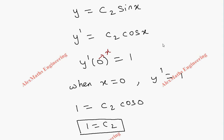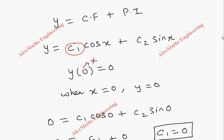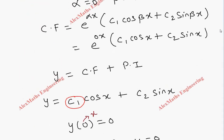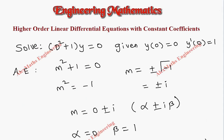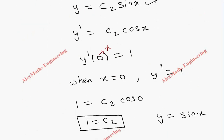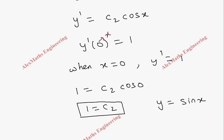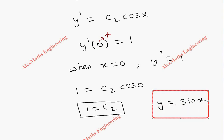By replacing c2 = 1 in the solution y = c2·sin(x), we get y = sin(x). So we got the general solution in terms of constants, and using the given conditions, we got the particular solution. The final solution of the given equation along with the given conditions is y = sin(x).